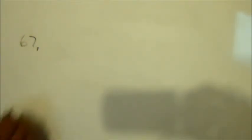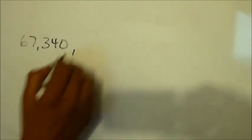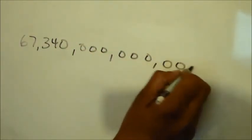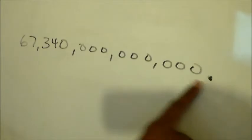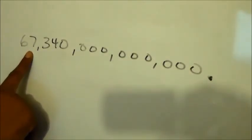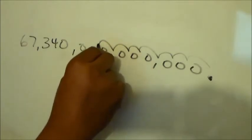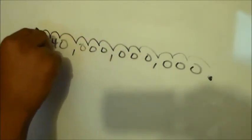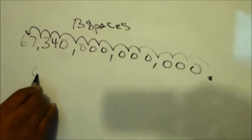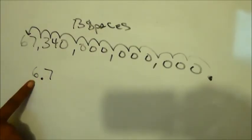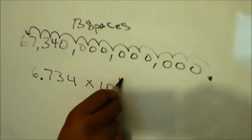We have 67,340 followed by 9 zeros. We have to bring the decimal over until it separates the ones and the tenths place of the new number. Watch this: 1, 2, 3, 4, 5, 6, 7, 8, 9, 10, 11, 12 - bang, right there. We move 13 spaces. So that is 6.734 times 10 to the 13th. That was our answer. The final answer has to have the decimal splitting the ones and the tenths place.